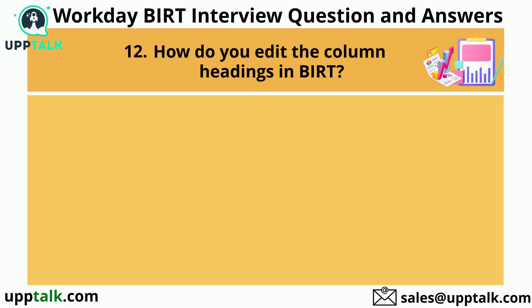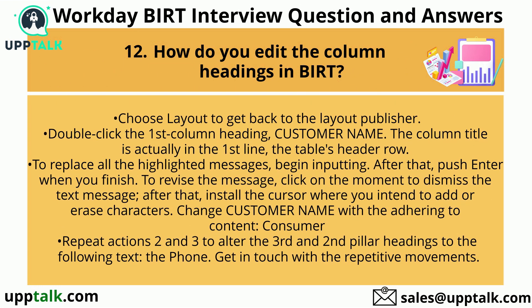How do you edit the column headings in BIRT? Choose Layout to return to the Layout view. Double-click the first column heading, Customer Name. The column title is in the first line, the table's header row. To replace the highlighted text, begin typing, then press Enter when you finish. To revise the text, click once to dismiss the text field, then position the cursor where you want to add or delete characters. Change Customer Name to Consumer. Repeat the steps to change the second and third column headings to Phone and Contact.